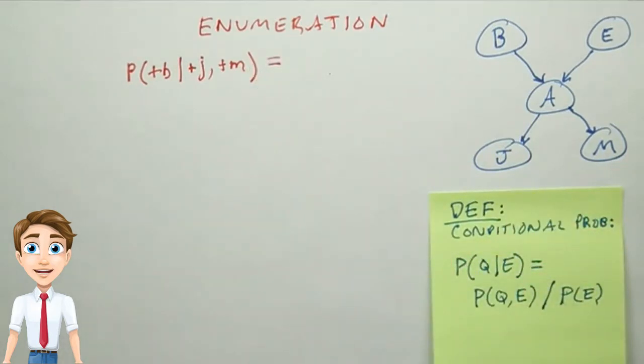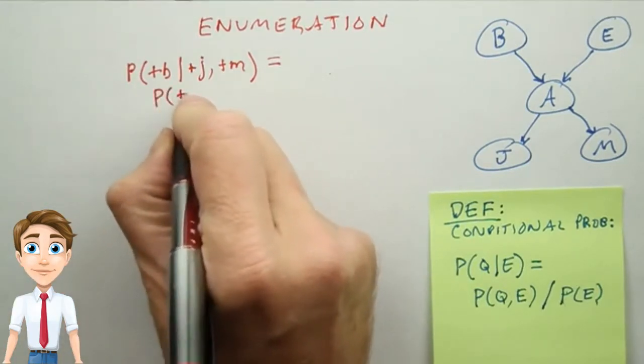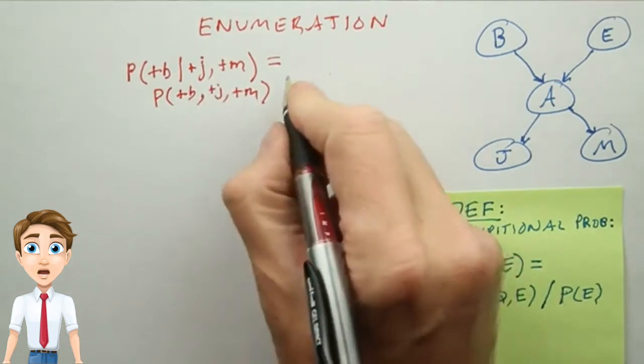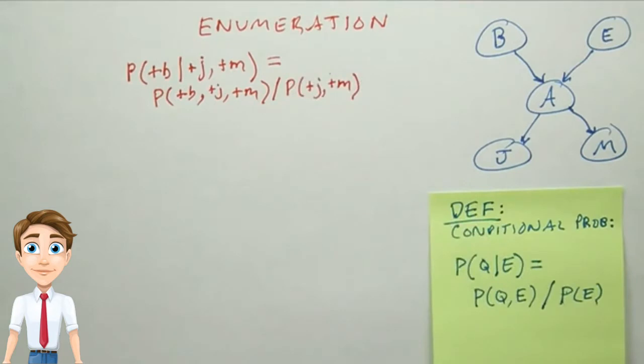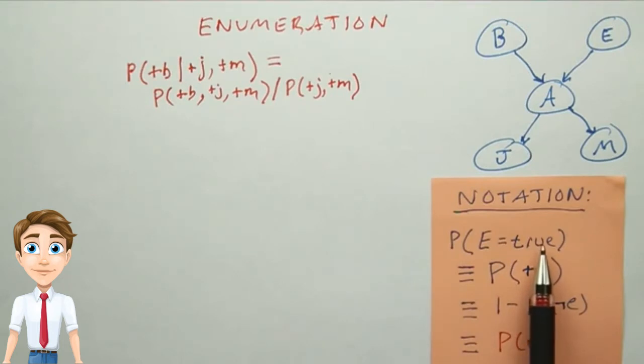So this query is equal to the joint probability distribution of all three variables divided by the conditionalized variables. Now note, I'm using a notation here where instead of writing out probability of some variable equals true, I'm just using the notation plus and then the variable name in lowercase. And if I wanted the negation, I would use negation sign.